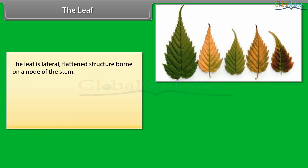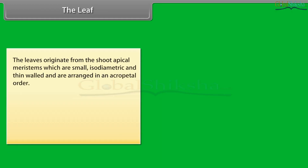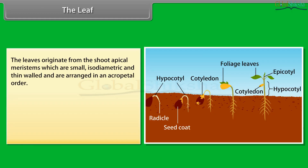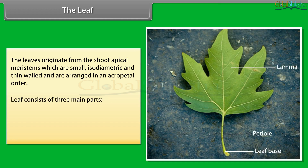The leaf is a lateral, flattened structure born on a node of the stem. The leaves are the food manufacturing organs of the plant. It bears a bud in its axil, and the axillary bud later develops into a branch. The leaves originate from the shoot apical meristems, which are small, isodiametric and thin-walled, and are arranged in an acropetal order.